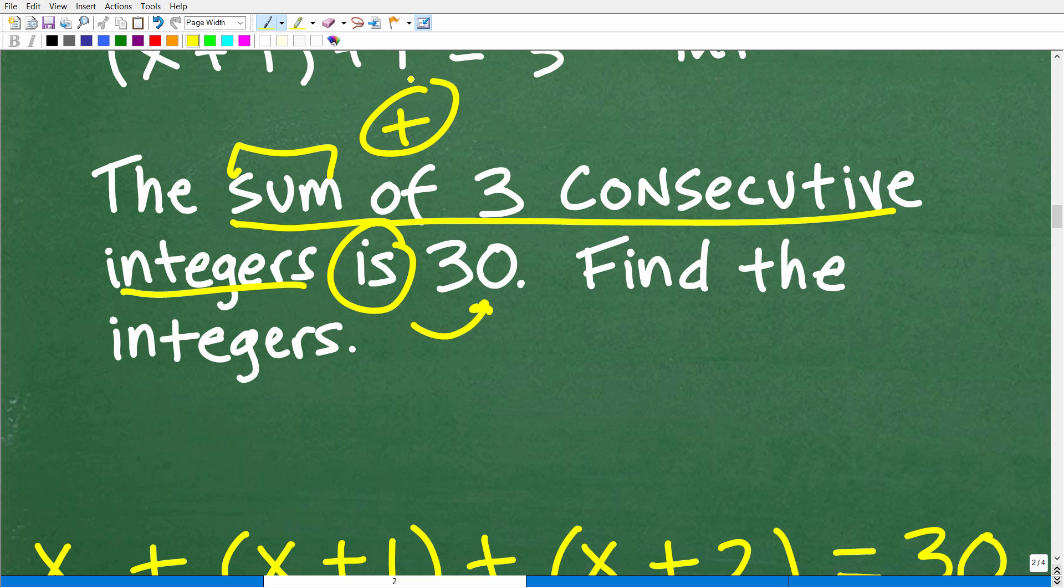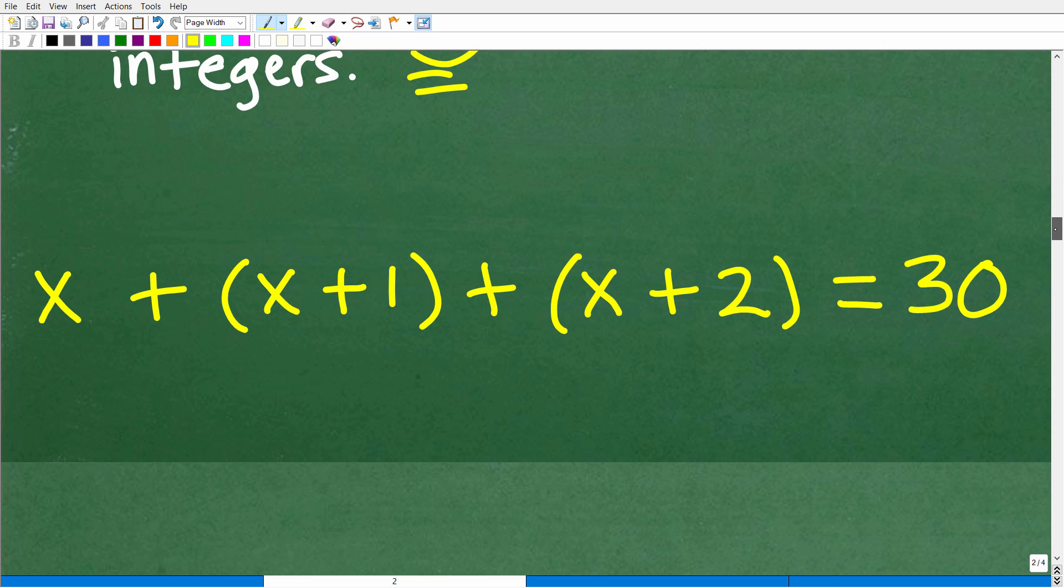The sum means what? Well, we have to add them up. And if we add them all up, it is equal to, remember that word is is equal to the equal sign. So if we add up these three consecutive integers, that's going to be equal to 30. So that is kind of the secret part of this problem that allows us to build an equation. All right, so here we go.